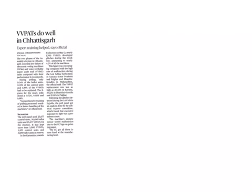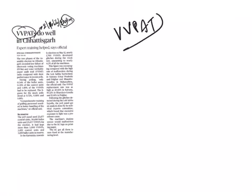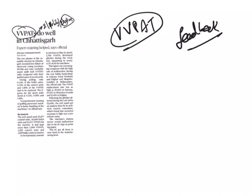Our next article is 'VVPAT does well in Chhattisgarh.' This comes under GS Paper 2 under the topic of polity and elections. From this article, we are going to see what VVPAT is. VVPAT stands for Voter Verified Paper Audit Trail. It is a method that provides feedback to voters — an independent verification printer machine attached to EVMs (Electronic Voting Machines) — allowing the voter to verify if their vote has gone to the intended candidate.